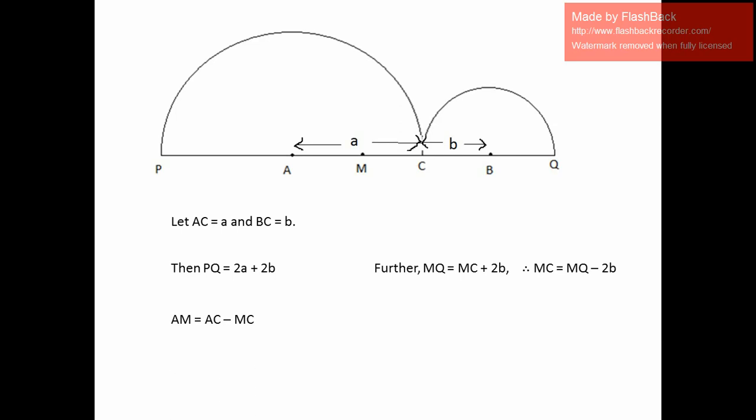Now, we start with AM which is required to be shown to be equal to BC. AM = AC - MC = a - (MQ - 2b).